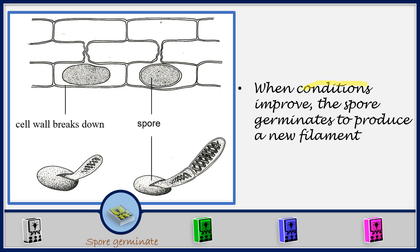When conditions improve, the spore will germinate to produce new filaments. The wall of the old filament will break and release the spore. When conditions become favorable, the spore germinates and produces a new Spirogyra filament. The whole of this process is what we are calling sexual reproduction, and it is the one we refer to as conjugation.